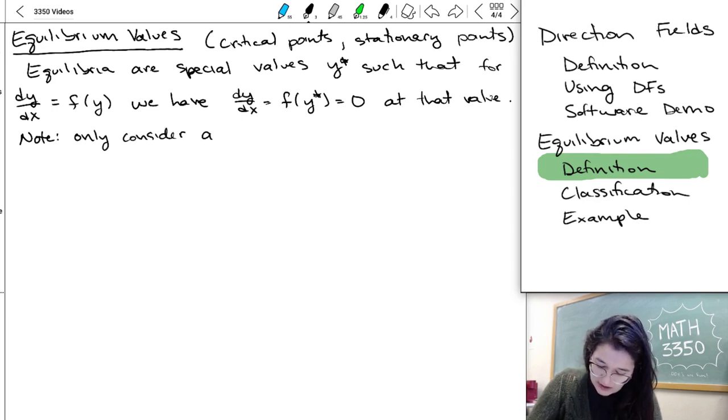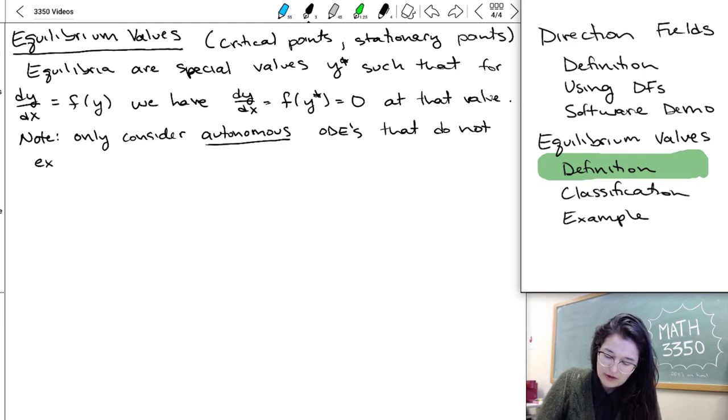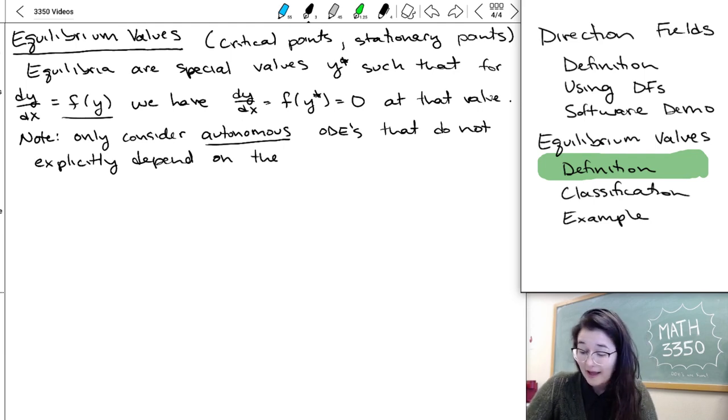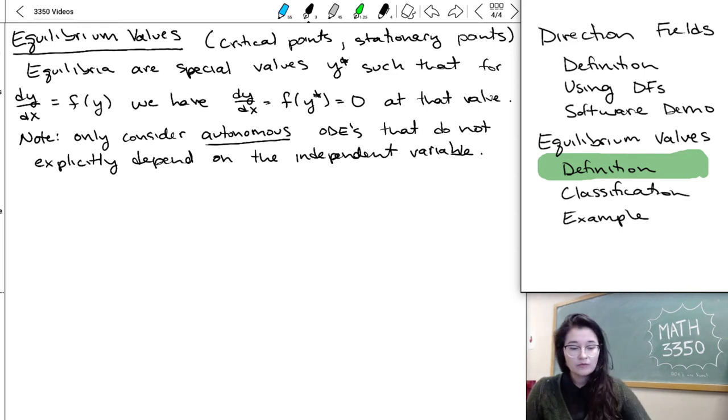So we only consider autonomous. And that's just the word for, it doesn't depend on x over here, or it doesn't explicitly depend on the independent variable.